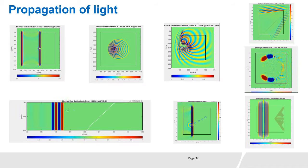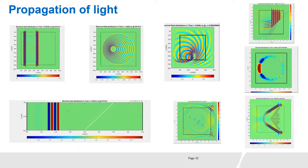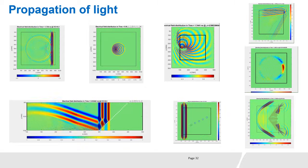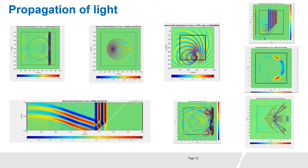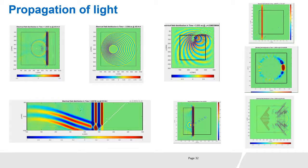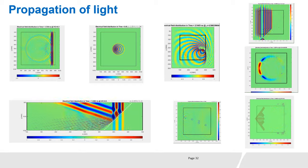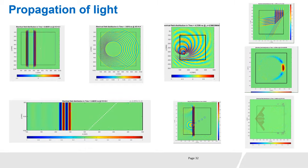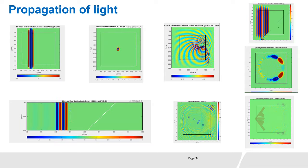These FDTD simulations show a moving metallic wire illuminated by a plane wave, a moving line source where we can see the Doppler effect, a rotating source, a moving dielectric interface, the Sagnac effect in a rotating waveguide, a moving semi-reflective mirror, multiple dielectric cylinders in motion, and a moving aircraft illuminated by a plane wave.